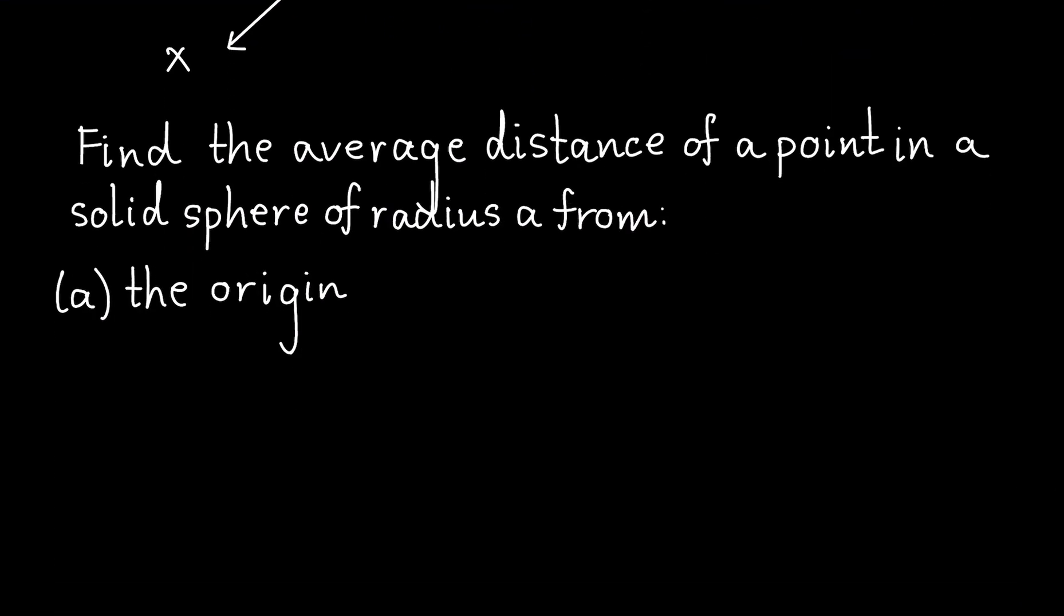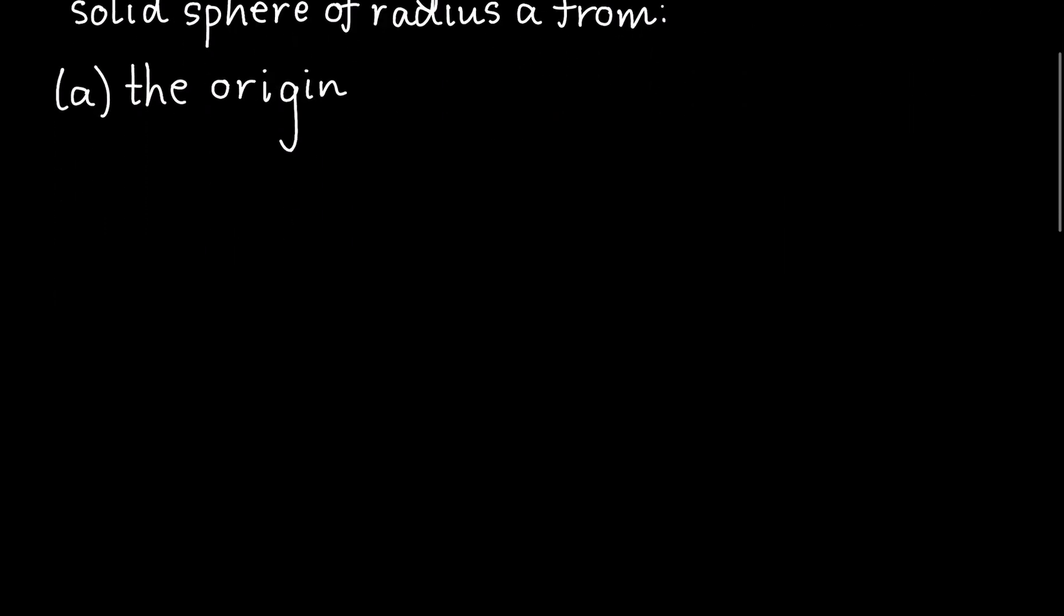It's about finding the average distance of a point in a solid sphere of radius a from the origin. We're given that this point goes from the origin. So we are considering the origin to be the specific location we're trying to find the average distance from. Alright, so how do we do this problem?